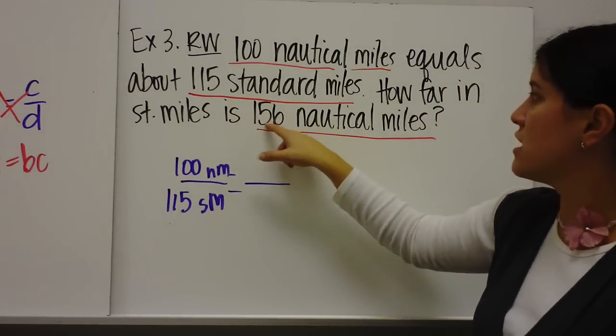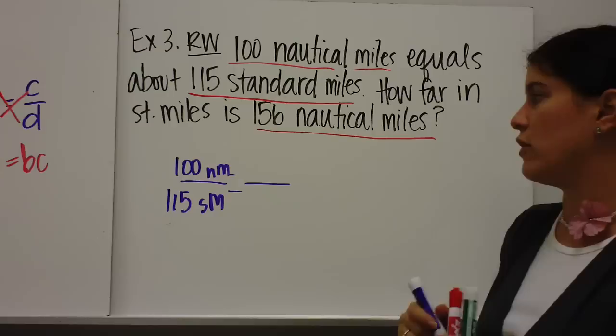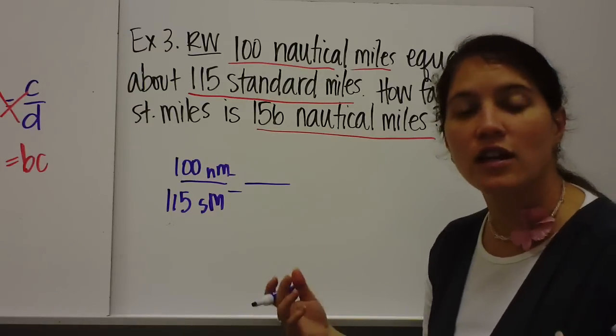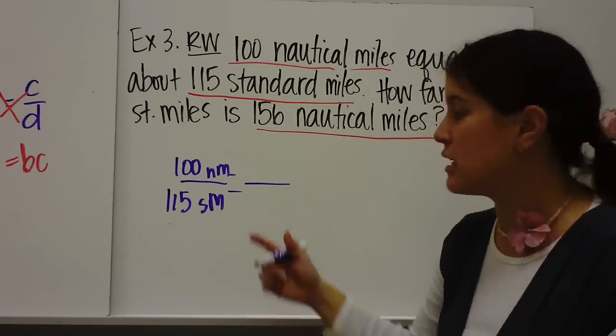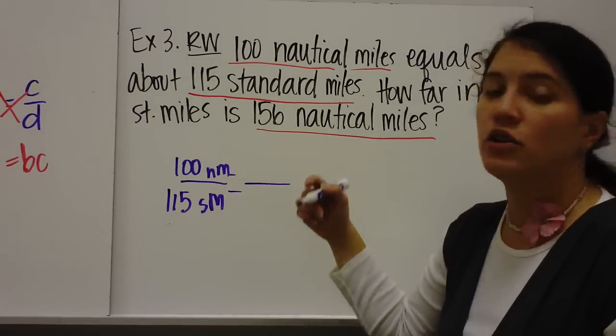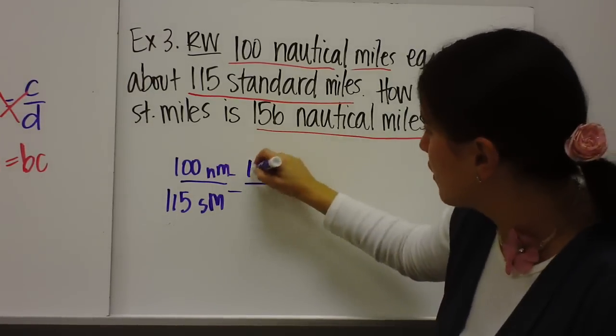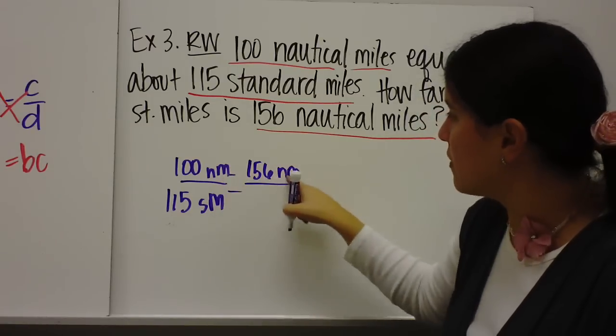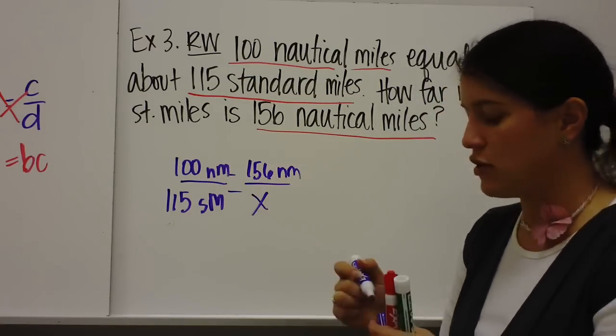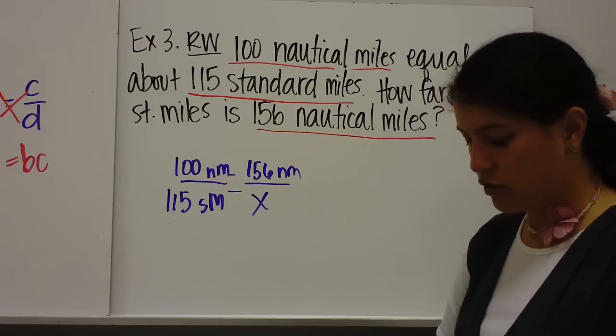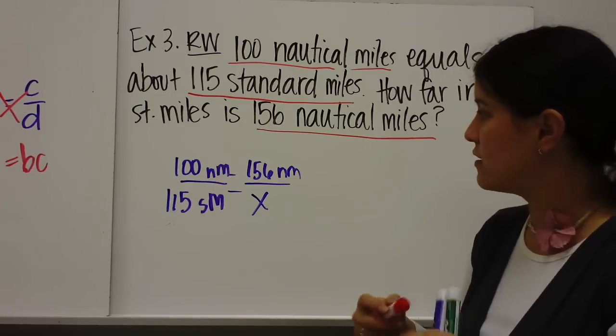The other piece of information left is this, 156 nautical miles. So now where do you think you would put the 156? On top or bottom? You would put it on top because you've got to keep your nautical miles together. And that would be your x. So now you would cross multiply and divide.